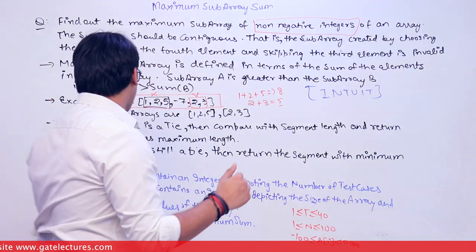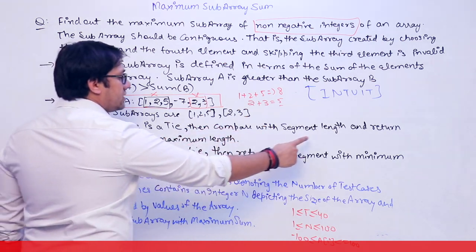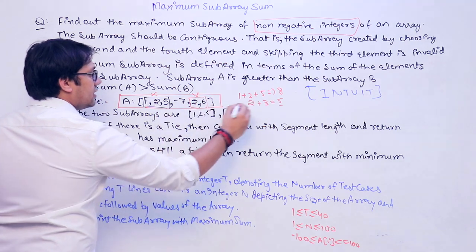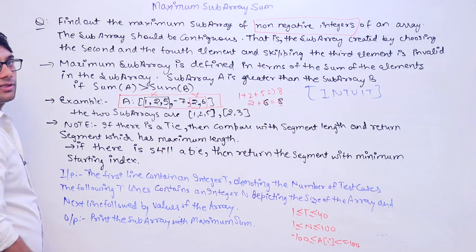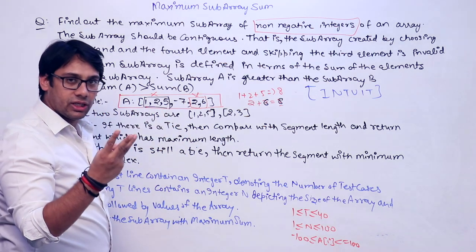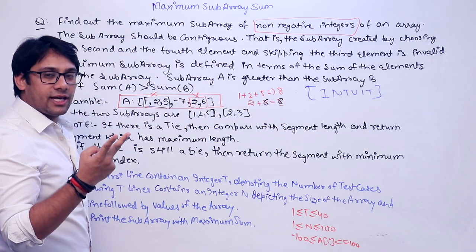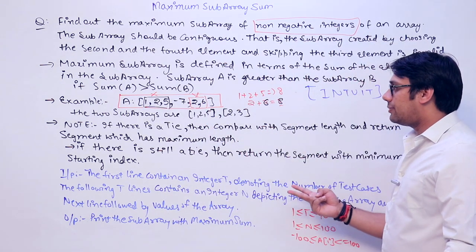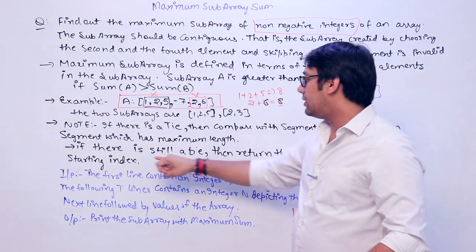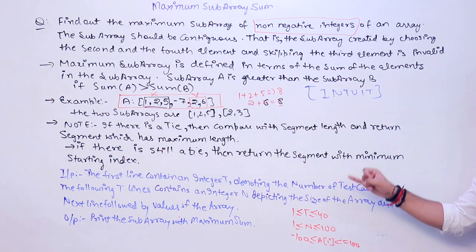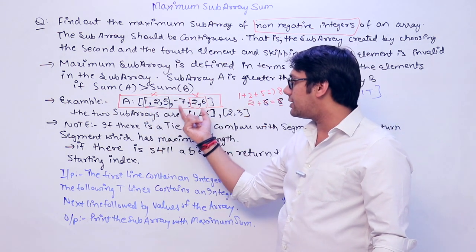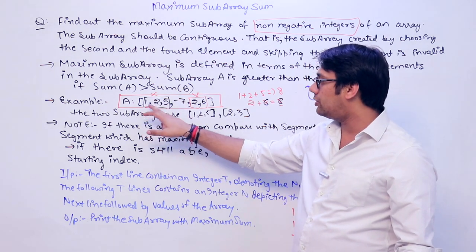If there is a tie in sum between two subarrays, compare their segment lengths and return the one with the maximum length. For example, if both subarrays have sum eight but one has length three and the other has length two, return the one with length three. If there is still a tie in length, return the segment with the minimum starting index — for example, the one starting at index zero.